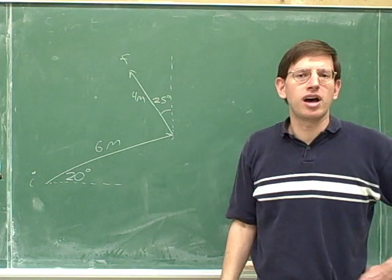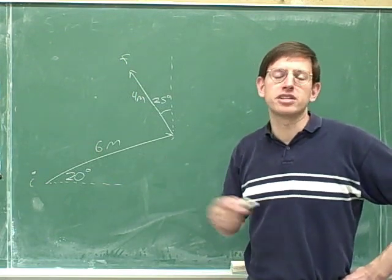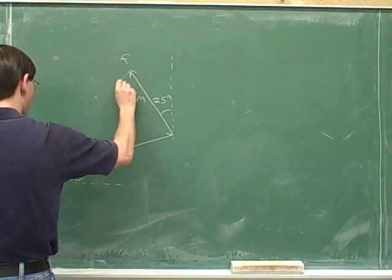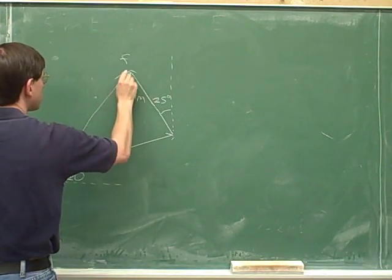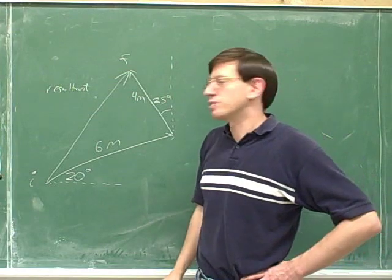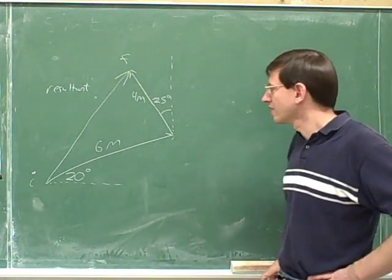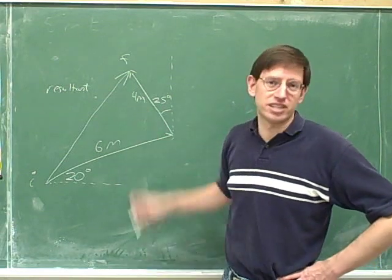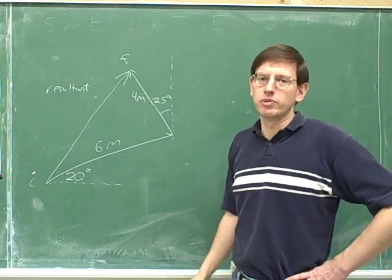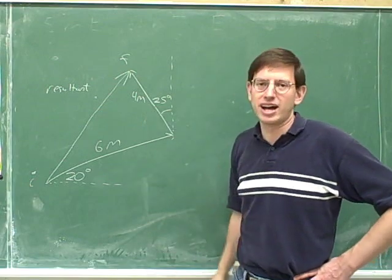The overall resultant displacement vector starts at the initial point and points to the final point. We'd like to know how far the final point is from the initial point. It's really obvious that you can't just add six and four — hopefully it's very clear you can't say the length is just six plus four. If the two lines had been parallel, we could add them to get ten. But these two directions were obviously not parallel to each other, so that simple addition won't work.